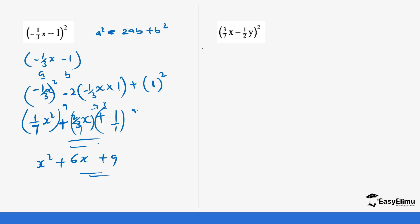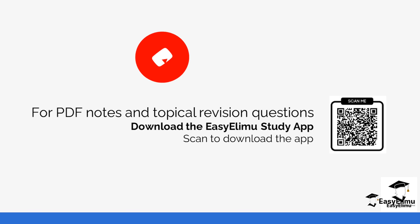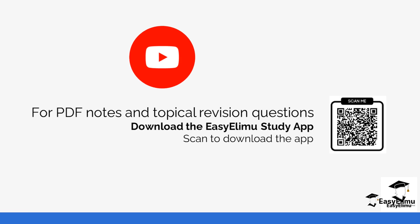You can work out the next question on your own using the same process. Remember you always have the alternative to expand the long way; using the identity just makes your work a little bit easier and faster. Check out more revision questions in the app, and see you in the next lesson.